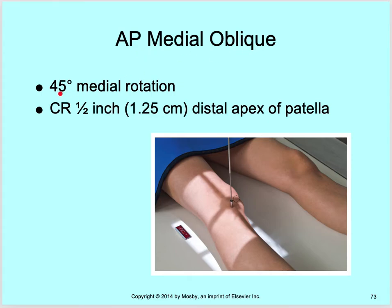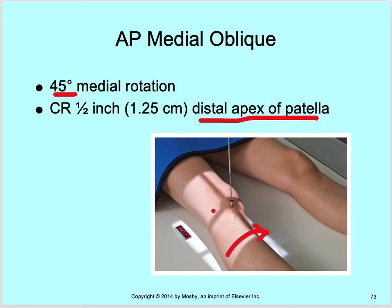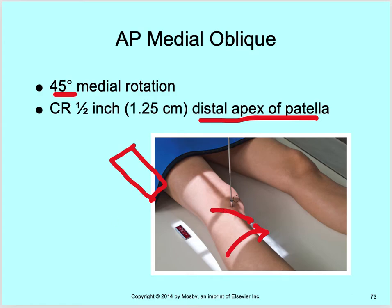The AP medial oblique is a 45 degree medial oblique rotation, just like your lateral is going to be a 45 degree rotation. Your central ray is still distal to the apex of the patella. This leg is rotating in 45 degrees — you want your epicondyles to make that 45 degree angle. You may need to put a pad under the hip so that when they rotate in, it opens up that fibular-tibial joint space.